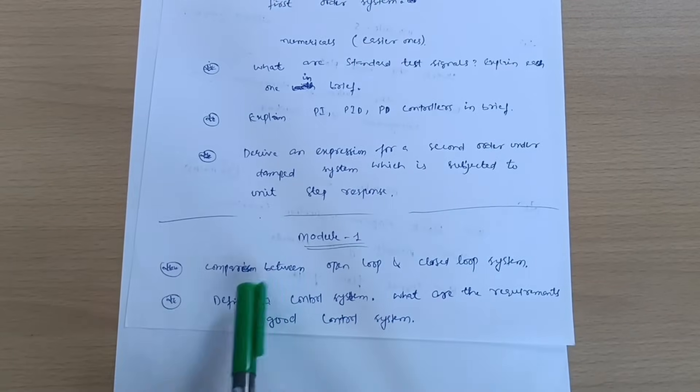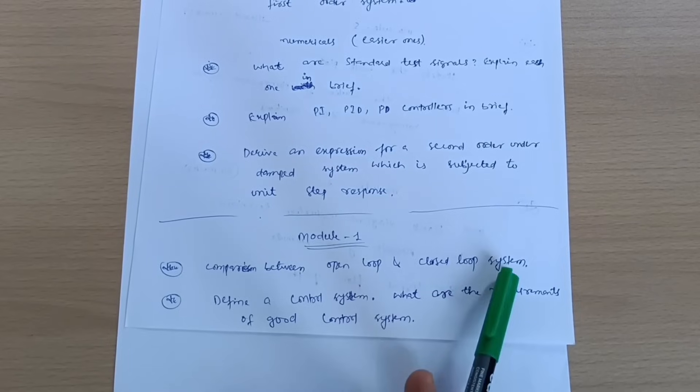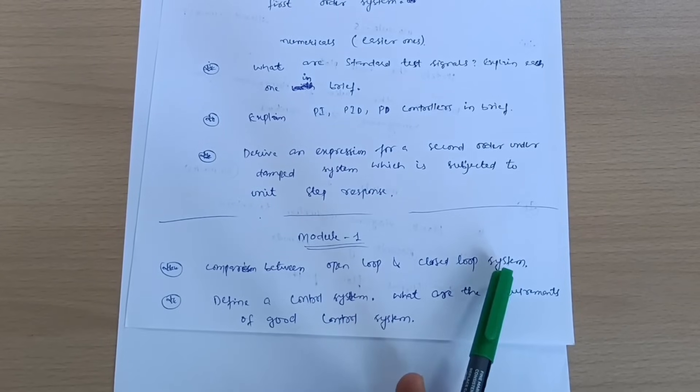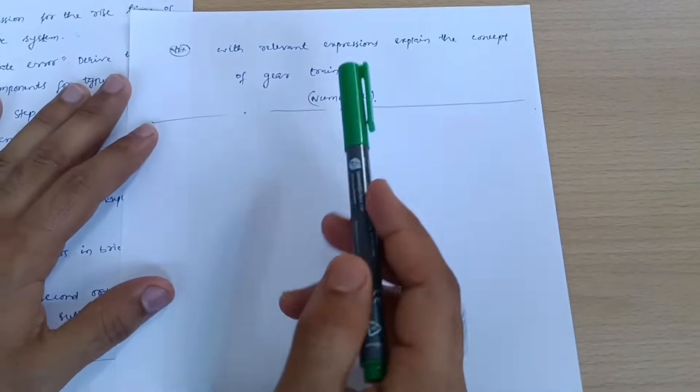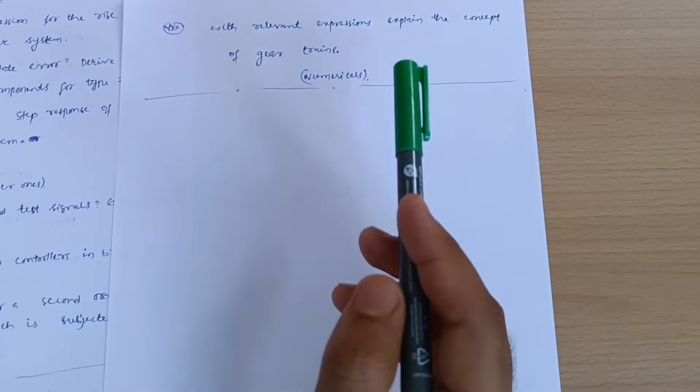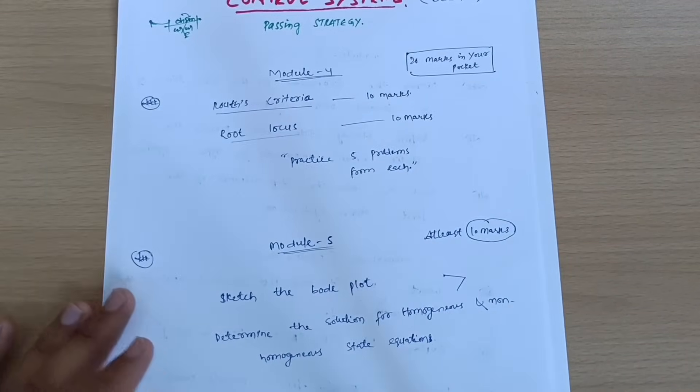Next is Module 1. Some theoretical concepts are there. Comparison between open loop and closed loop system, definitely it will be six marks question. Define a control system. What are the requirements of good control system? And also with relevant expression explain the concept of gear trains. There are numericals. If you are convenient with the numerical part, go through numericals. This is all about Control System subject.